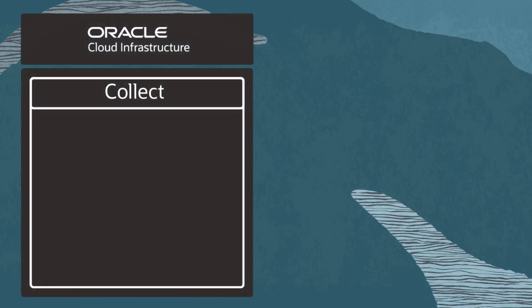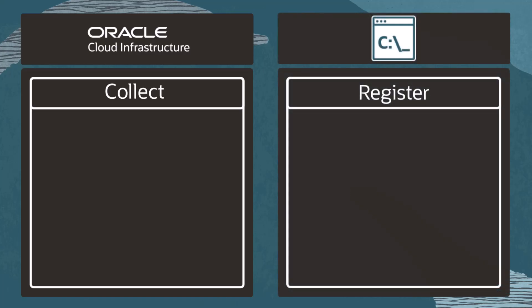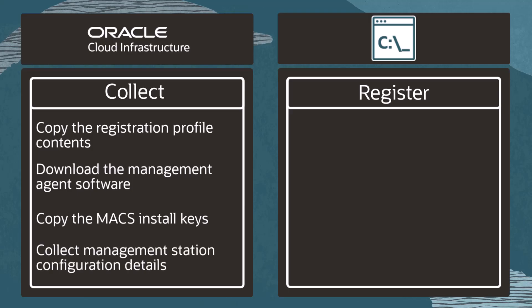First, collecting the needed information from the Oracle Cloud Infrastructure web console. We will need to collect information for the registration profile, download the management agent software, copy the management agent install key, and collect the hostname and proxy ports for the associated management station. All of this is available on the Oracle Cloud Infrastructure console.